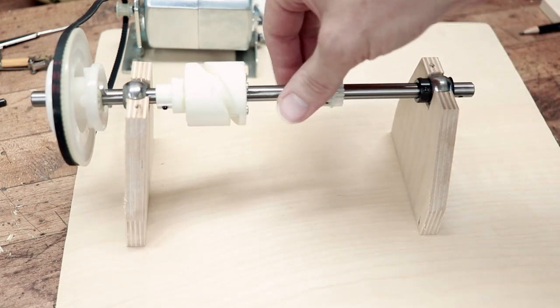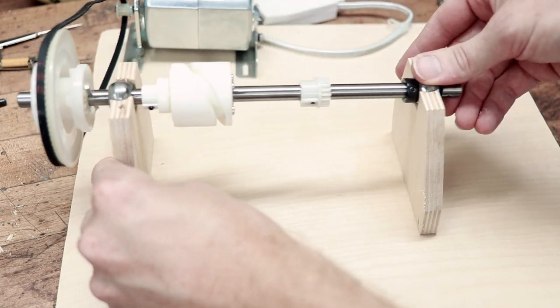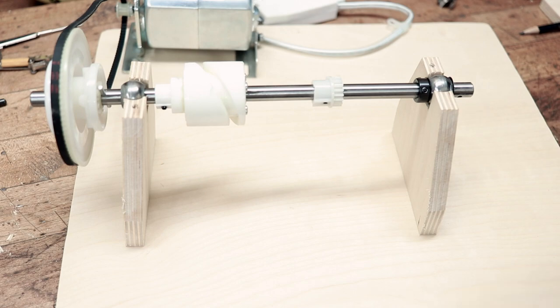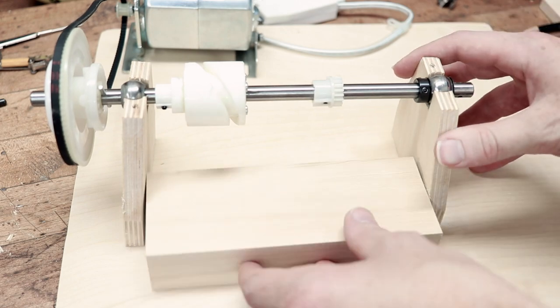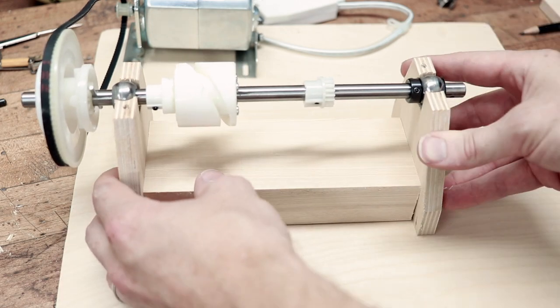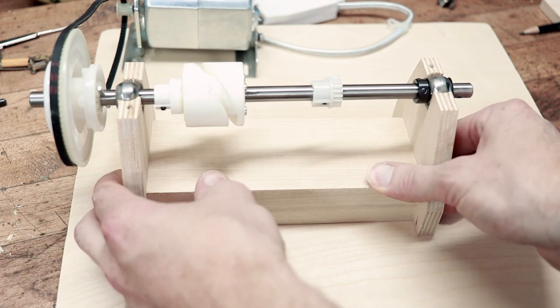But this whole assembly will have a tendency to want to rack side to side. So to fix that I cut down an old piece of 2x4 that would fit inside those two sections and really sturdy up the whole assembly.